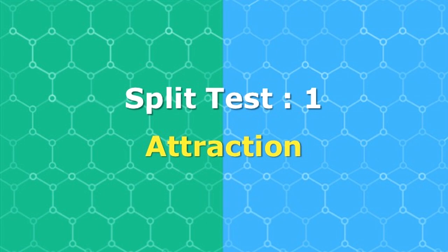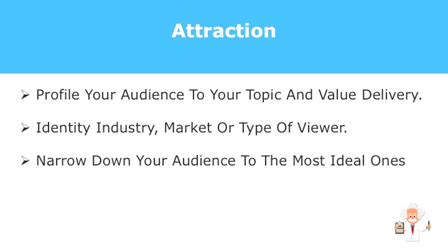The first component of an effective webinar is attraction. This component serves to plan and attract people to your webinar and helps increase conversions. When using the attraction factor, the first thing you should do is profile your audience who suit your topic and value delivery, by identifying which industry, market, or type of viewer will benefit from this topic before delivering your content. Using profiling works because it narrows down your audience to the most ideal ones who will benefit from your webinar content.